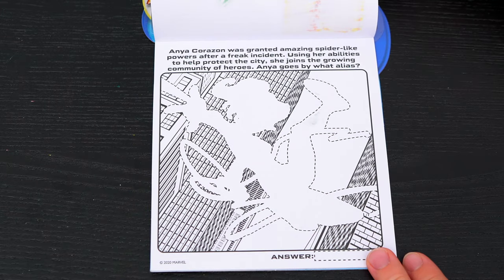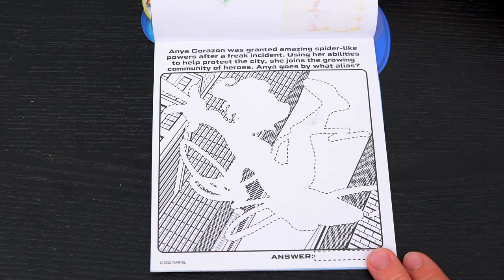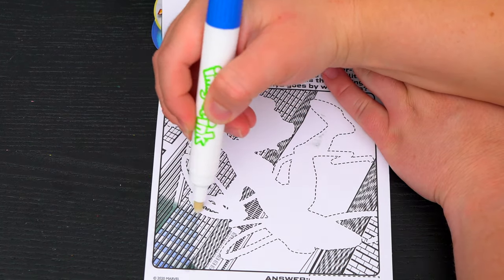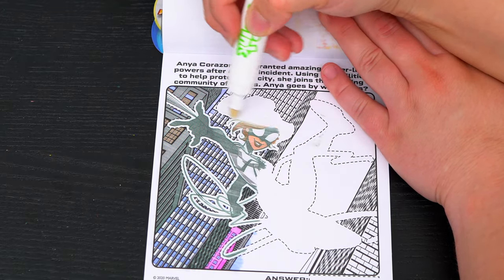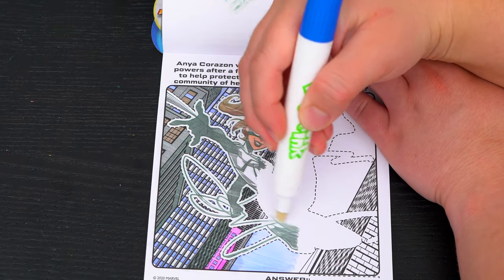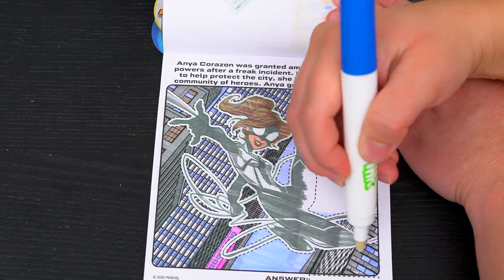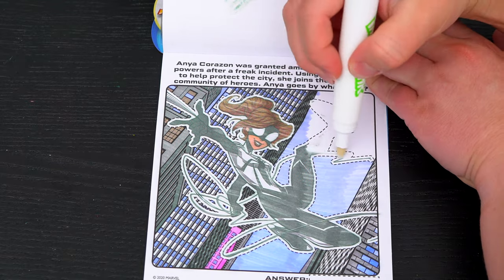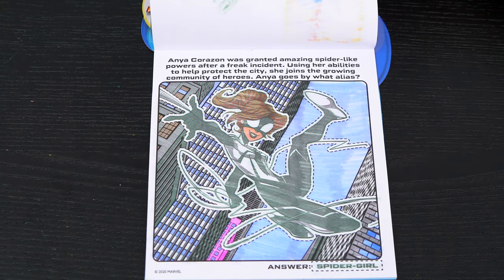Anya Corazon was granted amazing spider-like powers after a freak incident. Using her abilities to help protect the city, she joins the growing community of heroes. Anya goes by what alias? Yeah, it's Spider-Girl!